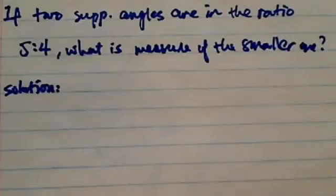If two supplementary angles are in a ratio of 5 to 4, and the question asks what is the measure of the smaller one?